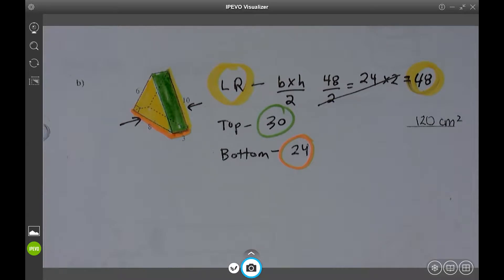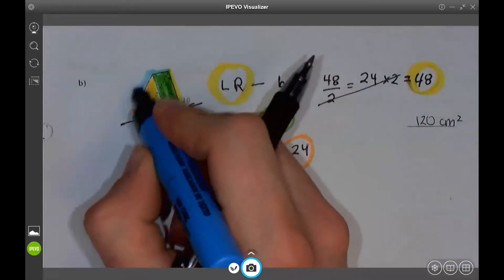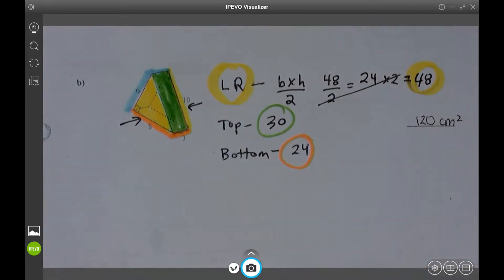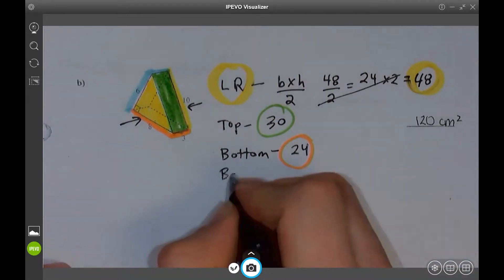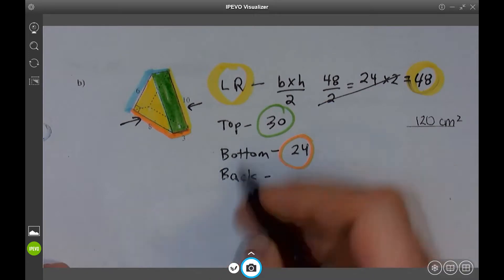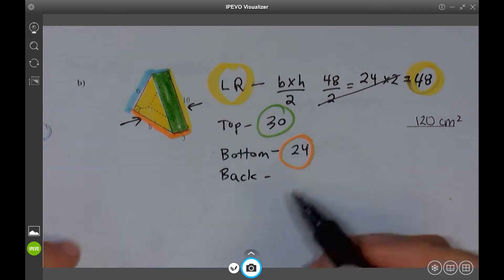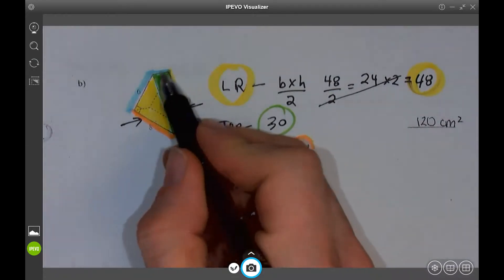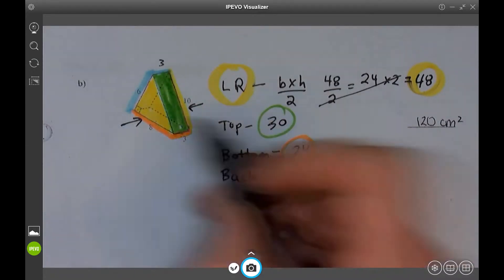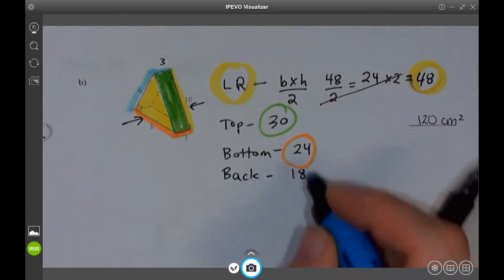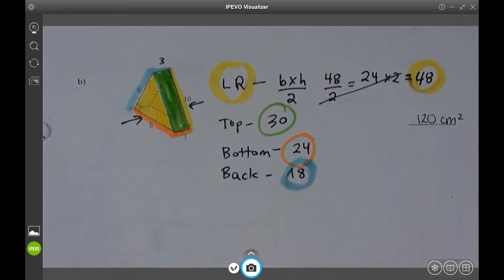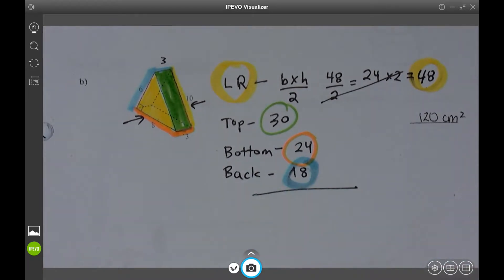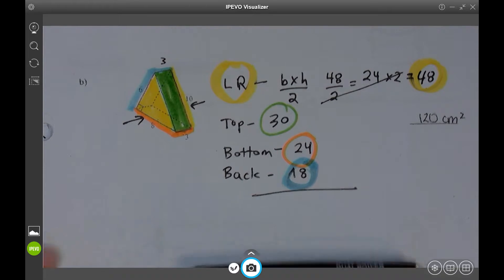And the final side here. We could call this back, I suppose. Anything you want to call it. You don't have to write the whole word either. Call it blue side, whatever. This is 6 times, what's this up here? 3. Because that is 3. 6 times 3 is 18. So I like to color code them. I'm very patient. I know some of you are going to rush through it, and when you rush, you're more likely to make a mistake.